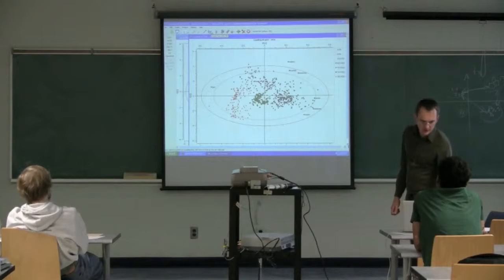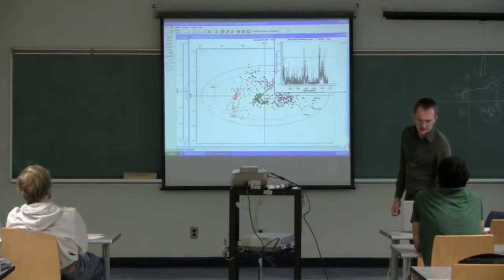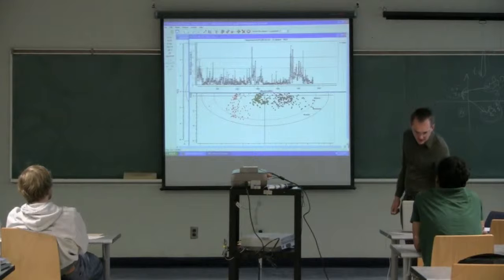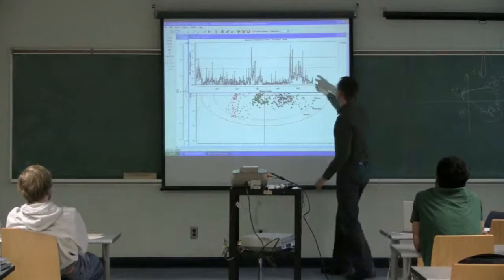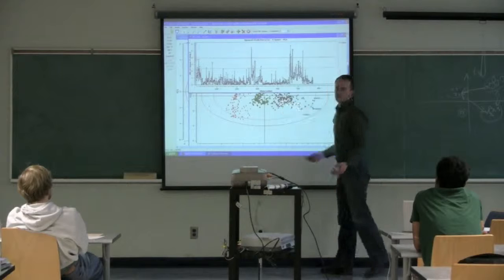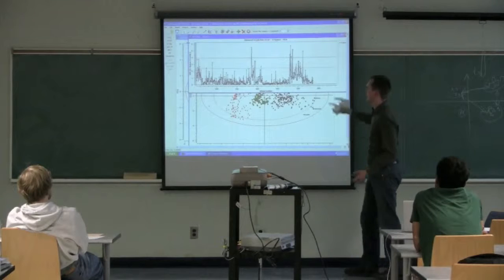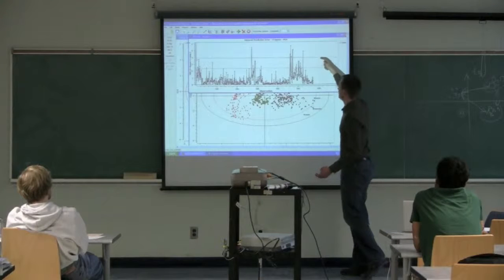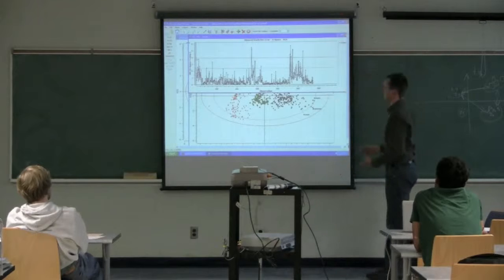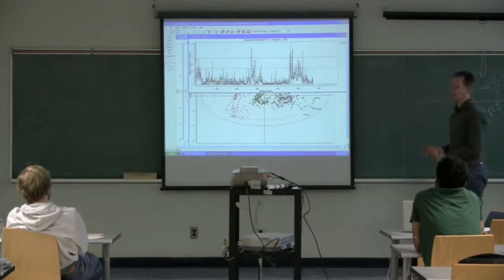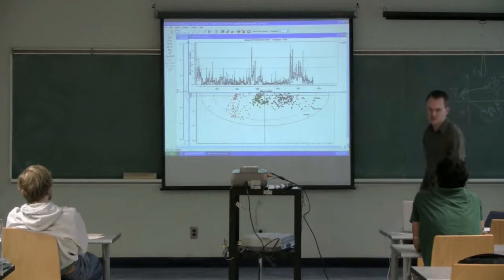That covers the basics of unsupervised classification. One step I omitted at the beginning was to look at SPE on the training data. With 500-odd observations, I expect about five or six data points above my 99% limit, and I have about seven — not a big deal. No strong outliers affecting the model.